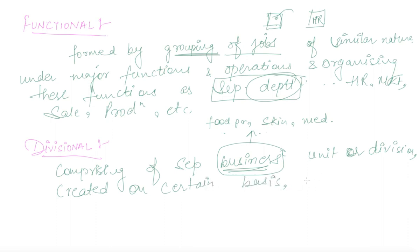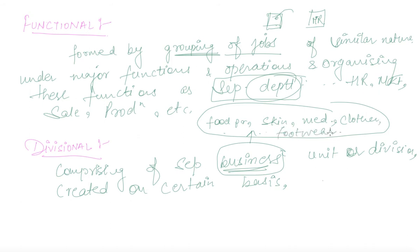For example, large companies are engaged in production of so many products such as food products, skin care, medicine, clothes, or footwear. You can also take the example of Himalaya, who are engaged in production of soap, face wash, shampoos, as well as medicine and skin care products. This is also a good example of a divisional organization.